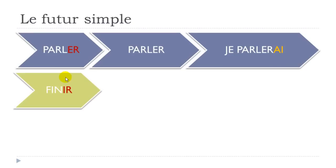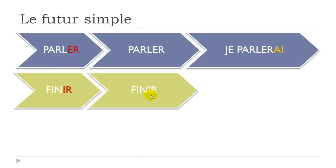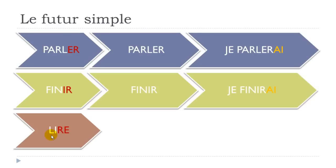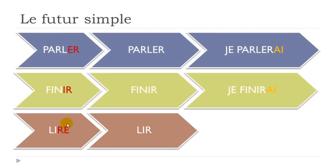The endings for le futur simple: for 'je' → AI (pronounced open A); for 'tu' → AS (S not pronounced, so pronounced A); for 'il/elle' → A; for 'nous' → ONS (final S not pronounced, nasal sound ON); for 'vous' → EZ (pronounced A); for 'ils/elles' → ONT (final T not pronounced, nasal ON). So phonetically: AI, A, A, ON, ET, ON.